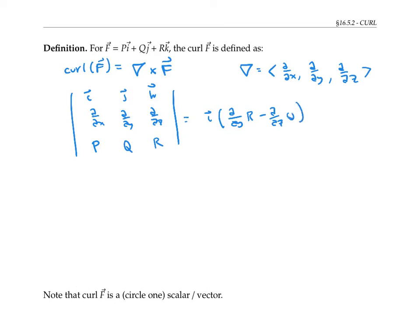And we work that out as i times (∂R/∂y - ∂Q/∂z) minus j times (∂R/∂x - ∂P/∂z) plus k times (∂Q/∂x - ∂P/∂y).